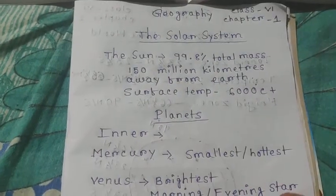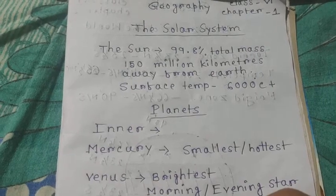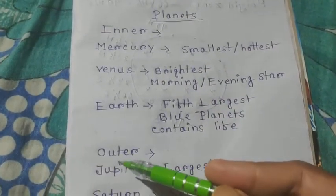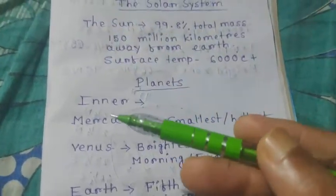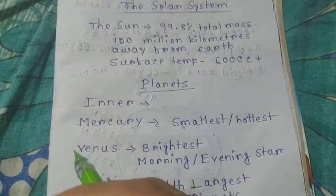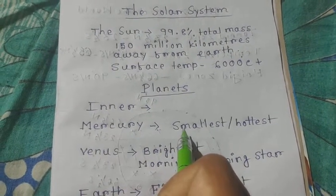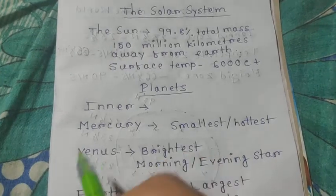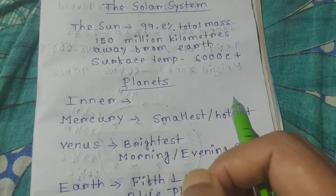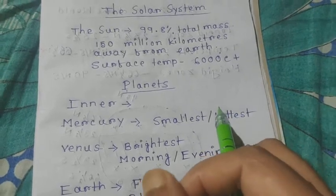Another major feature of our solar system is planets. Planets are differentiated into two categories: inner planets and outer planets. First, the inner planets. The first planet close to the sun is Mercury. It is the smallest planet in our solar system and also the hottest planet. It does not contain any satellite.